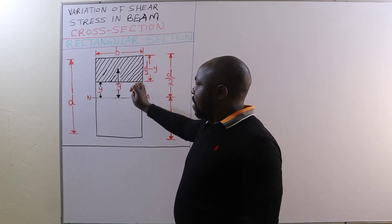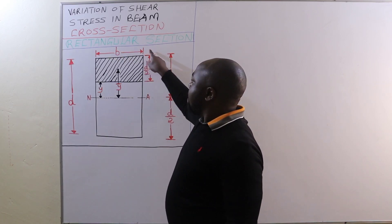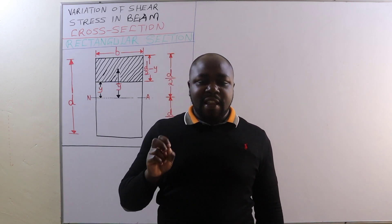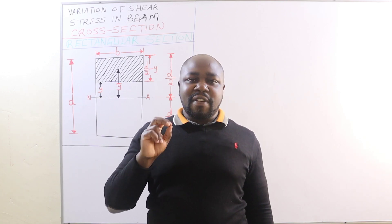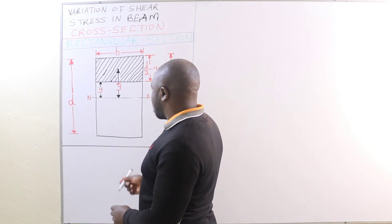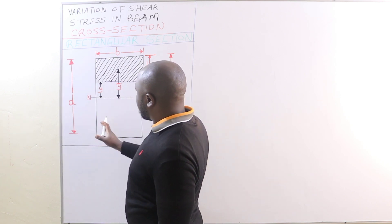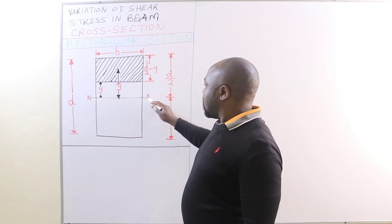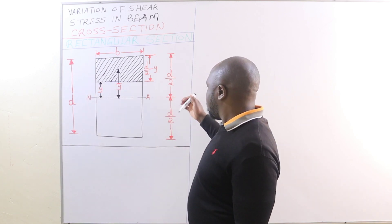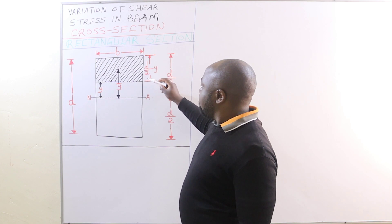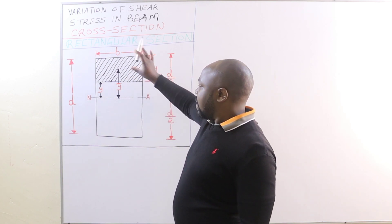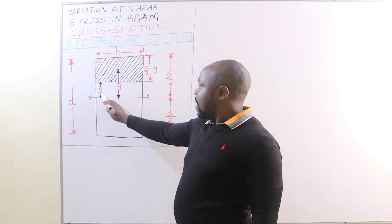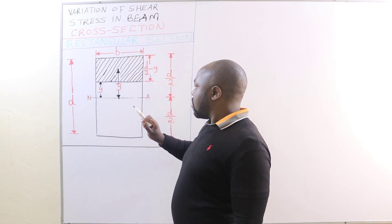For this rectangular cross section with a breadth of B and a depth of D, we have the neutral axis. The neutral axis is the point or section where the center of gravity of the beam is located. The center of gravity of this beam section is at the center of the rectangular section, and that is where the neutral axis passes. Above the neutral axis we have half the depth of the beam, and below the neutral axis we have a section whose distance from the neutral axis to its bottom is y.